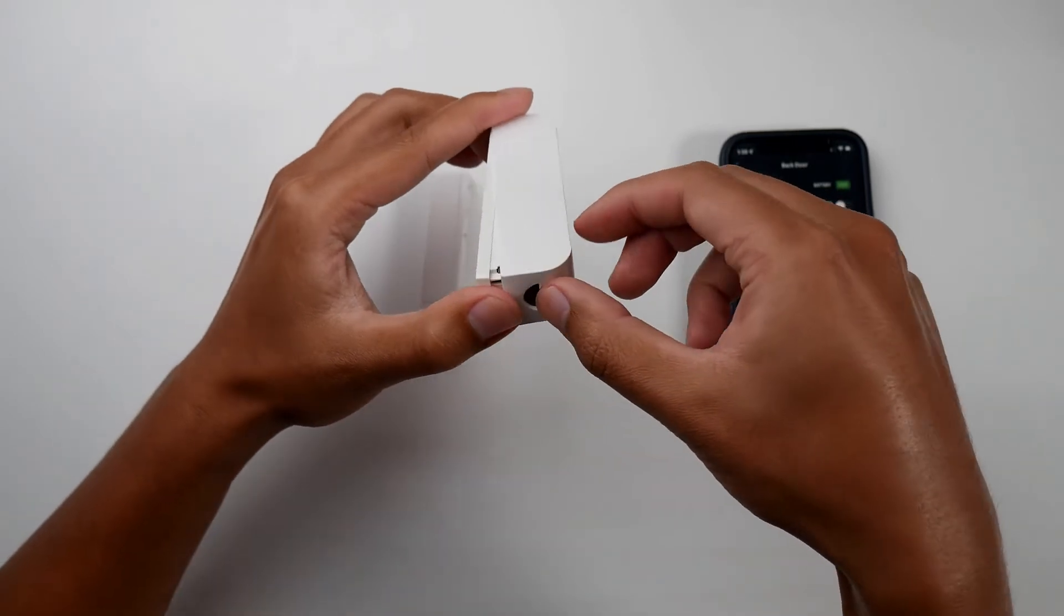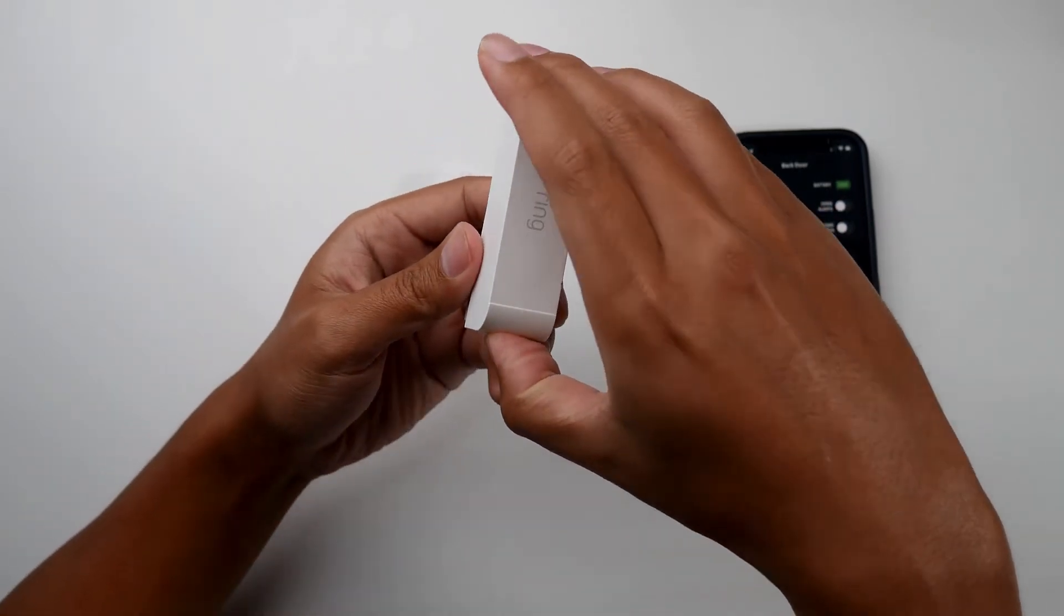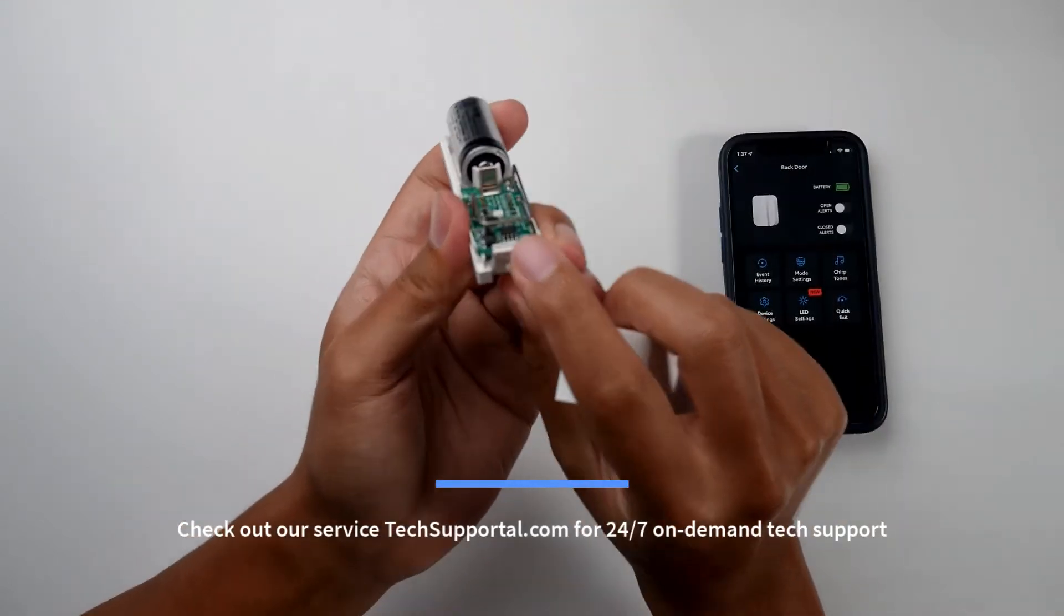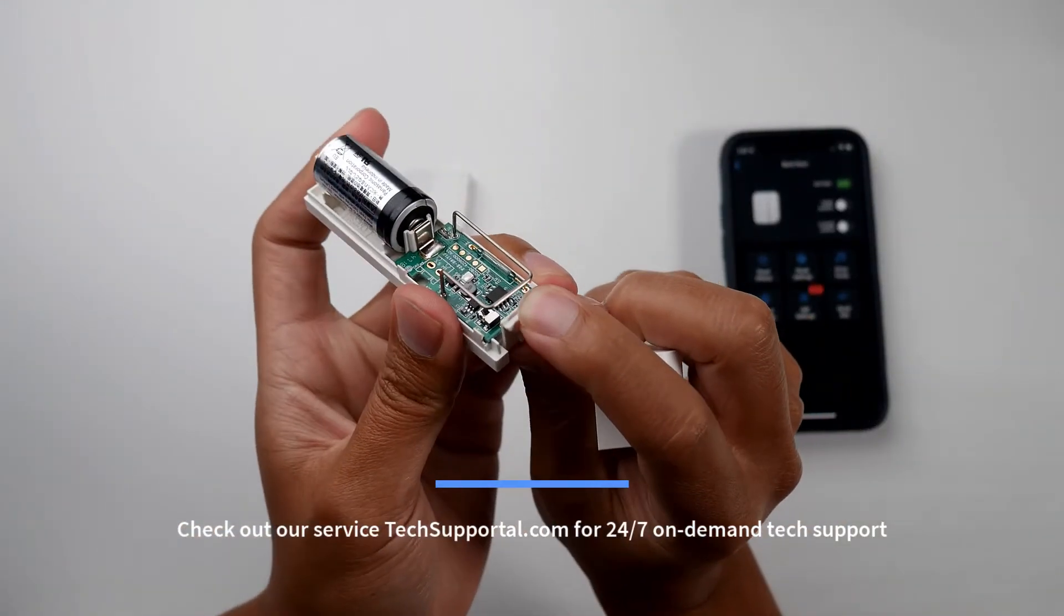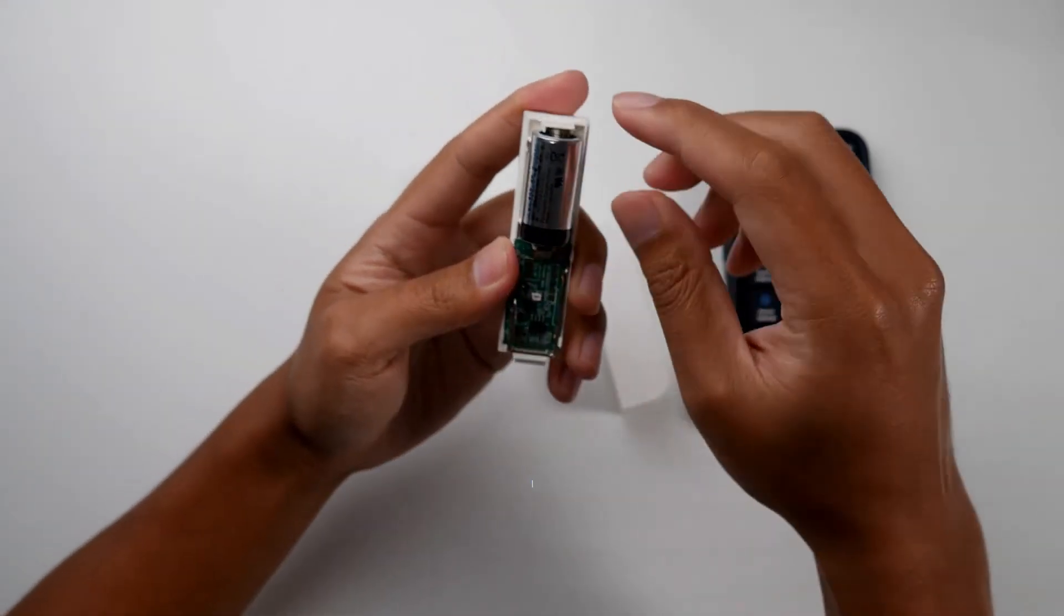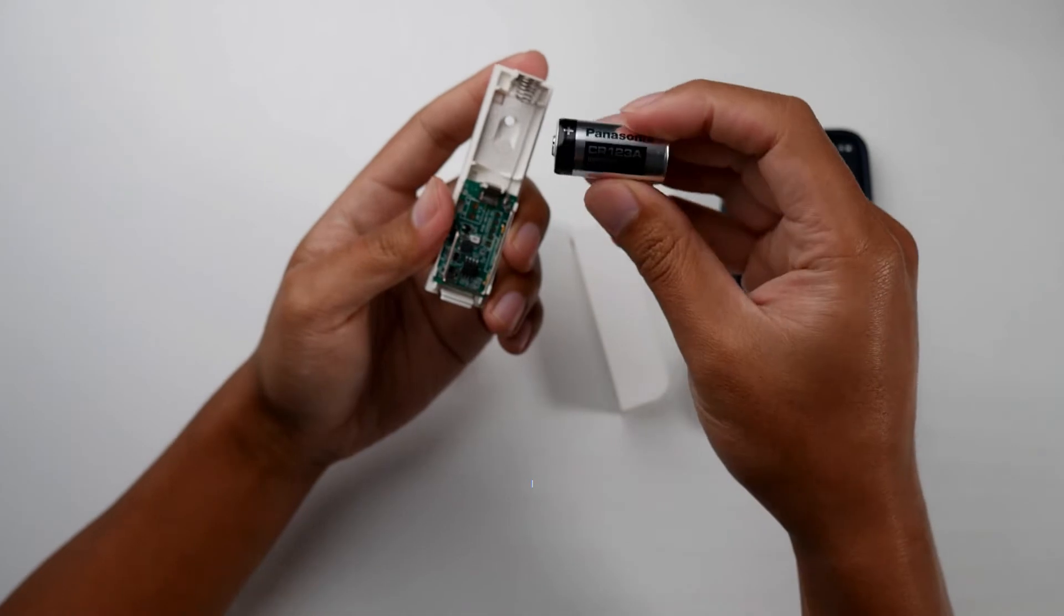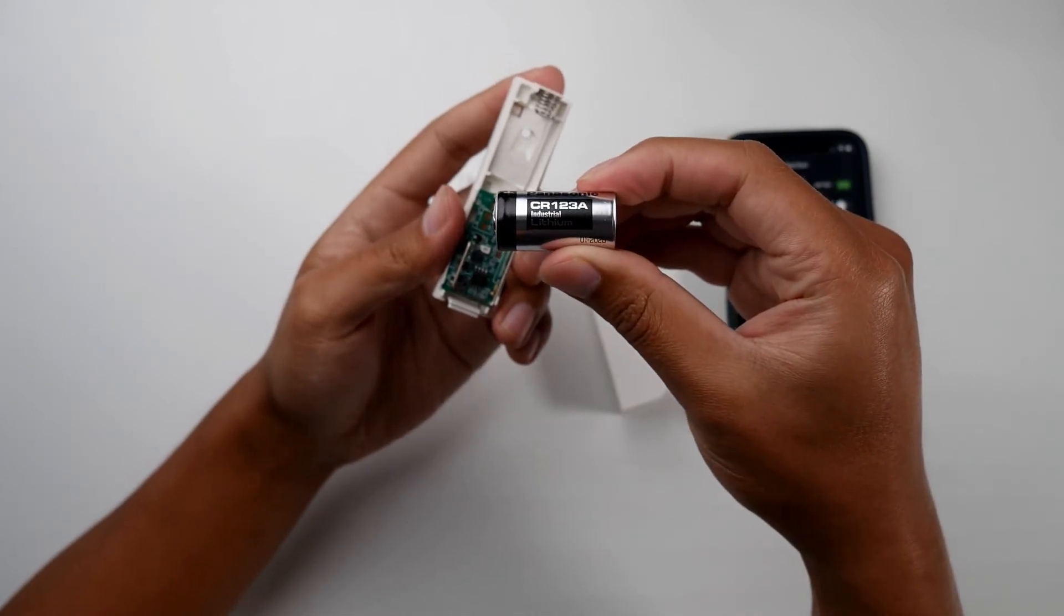It's kind of meant for your thumb, so just pull up on it, press down while pulling up, and that should unlock the lever. After that, you just swap out the battery. This is a CR123a.